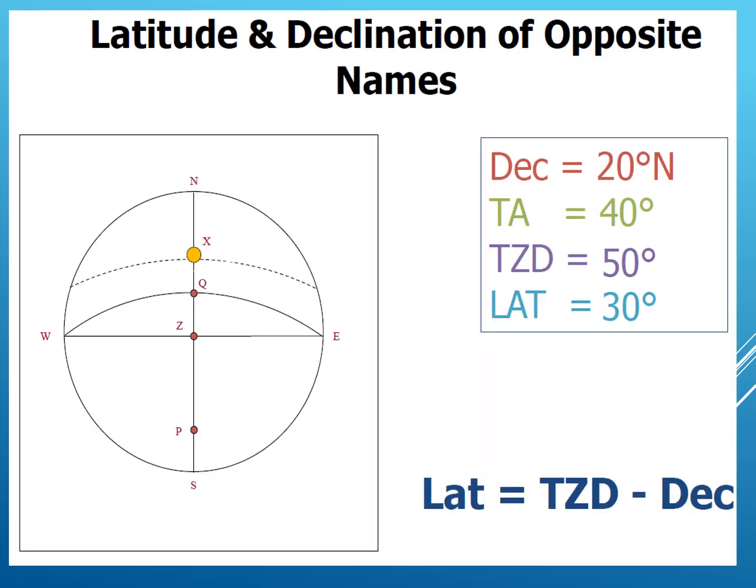For example, if the declination is 20 degrees north, QX equals 20 degrees north — the sun's declination is 20 degrees north. True altitude is 40 degrees. True zenith distance ZX is 50 degrees. Your latitude will be ZX minus the declination QX: 50 minus 20 equals 30 degrees. The observer is south of the equinoxial, so the latitude is 30 degrees south. The declination of the body is north because the celestial body X is north of the equinoxial.